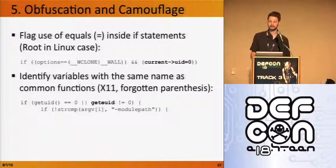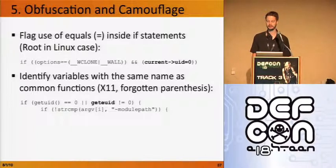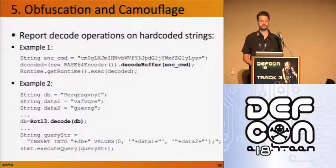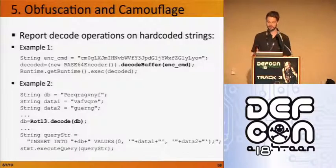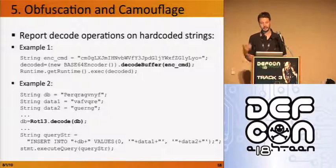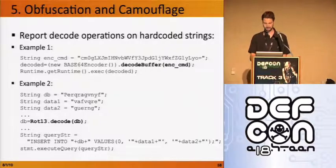For obfuscation and camouflage: we flag use of a single equals sign inside an if statement — you should not do that. We flag when you use the same name for a variable as a common function. And the really useful rule: if you're trying to decode hard-coded strings, we flag that as obfuscation and camouflage. That turned out to be a really useful rule — we found a lot of issues with it. If you decode a hard-coded string, it's very suspicious. It's implicitly saying 'I'm hiding something' and you do not want that in your code.